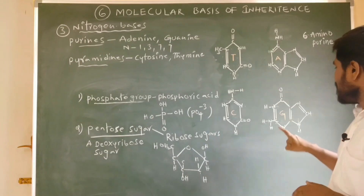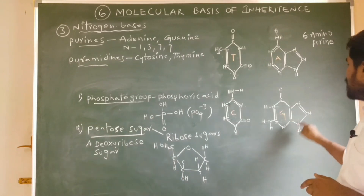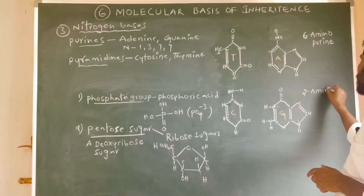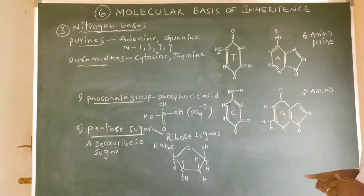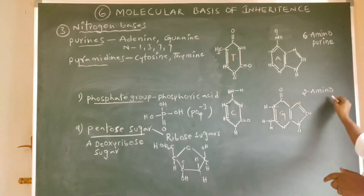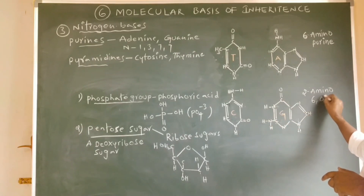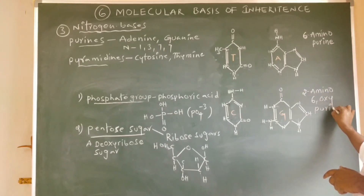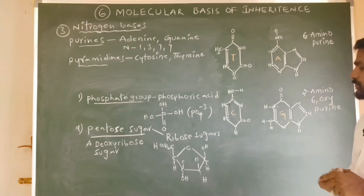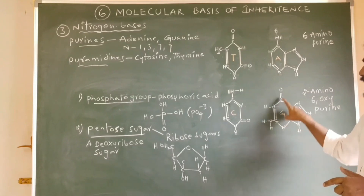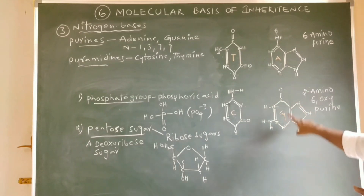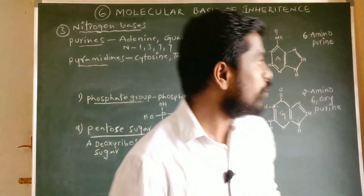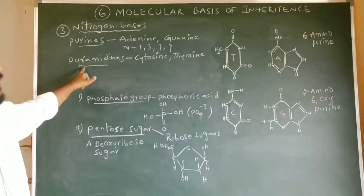According to IUPAC, the scientific name of guanine is 2-amino-6-oxypurine — having an amino group at the second position and an oxo group at the sixth position.